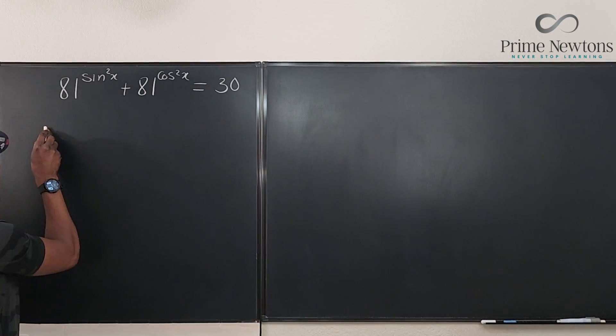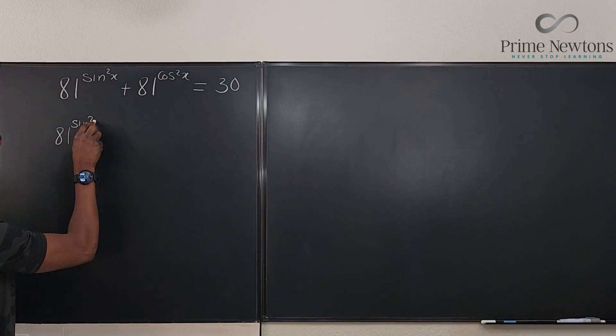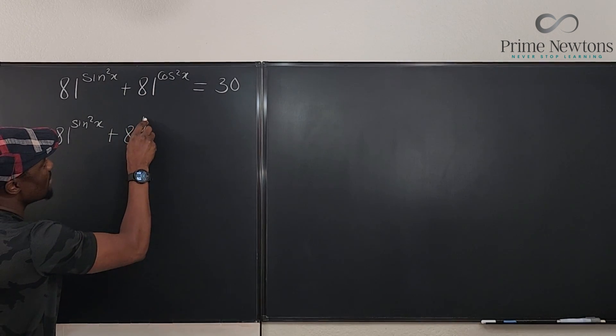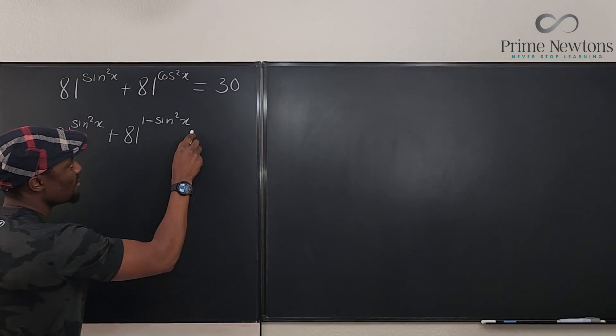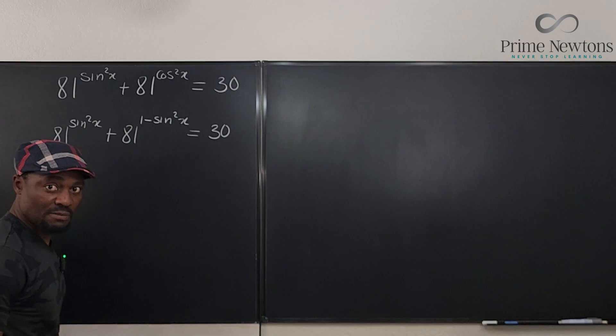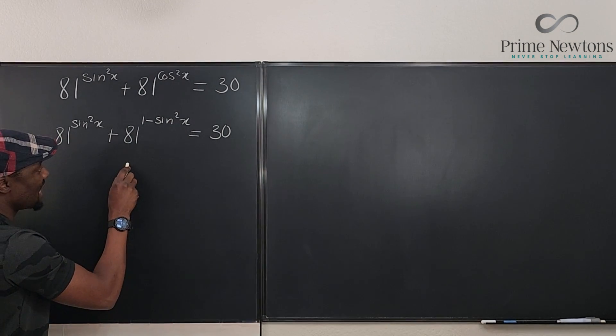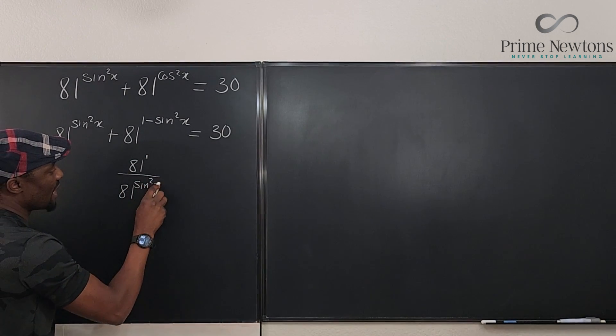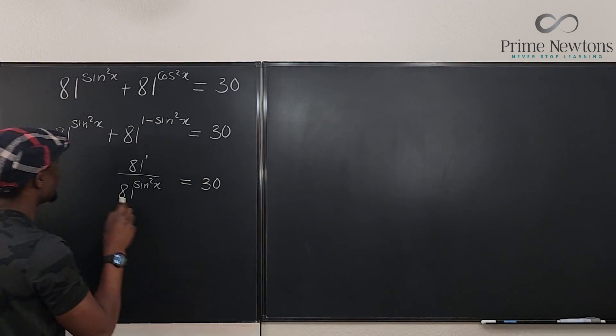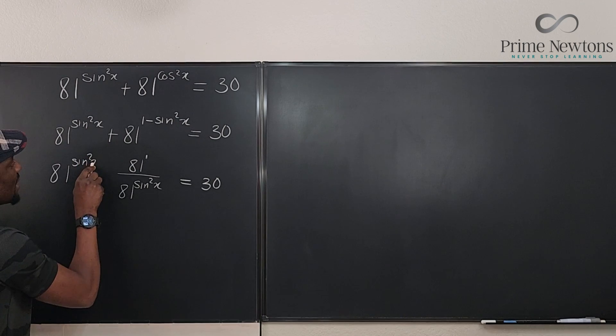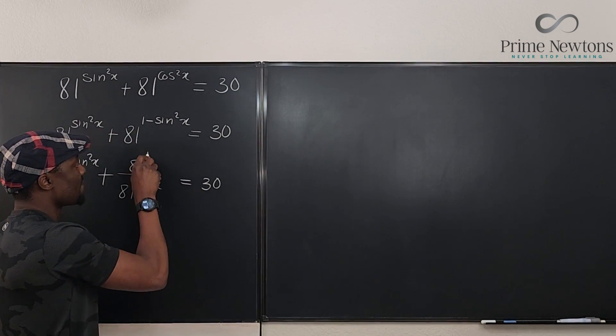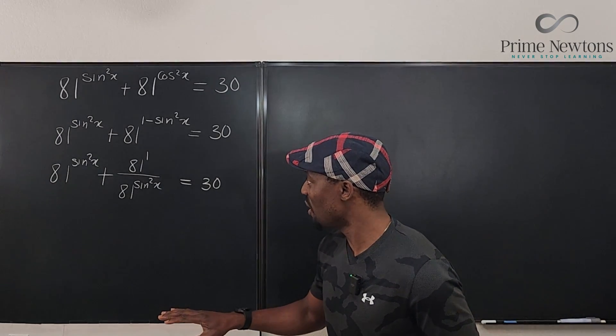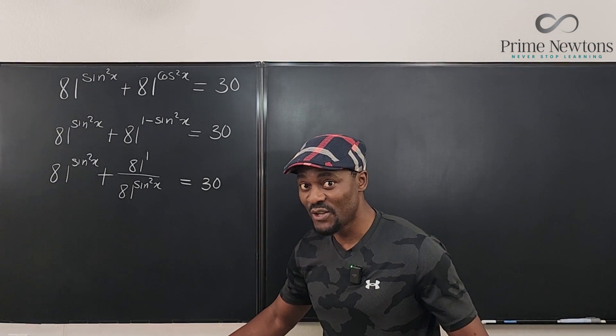Let's say we're gonna write this as 81 to sine squared x plus 81 to what we have, it will be 1 minus sine squared x. And this would be equal to 30. Now, with the laws of exponents, we know this is a division. We can write this as 81 to the first power divided by 81 to sine squared x will be equal to 30. And this is 81 to sine squared x. There's a plus sign here. So you ask me, how is this good? I know how it is good. Because what I have right now is only in terms of sine x. There's no more cosine.